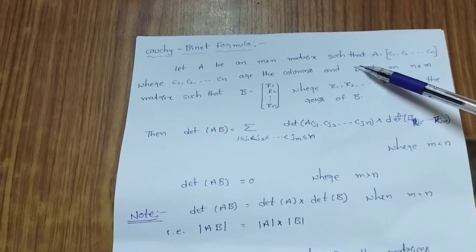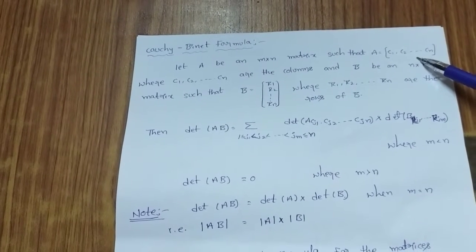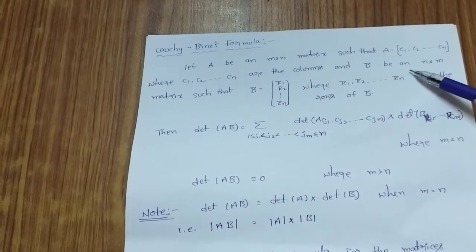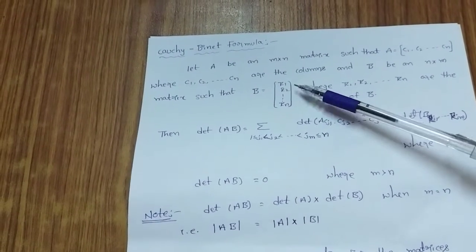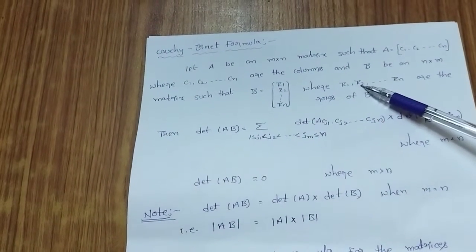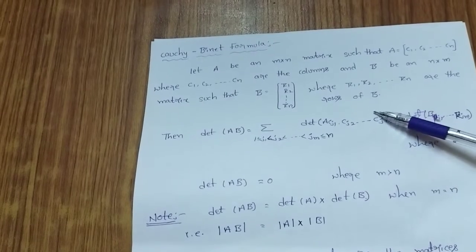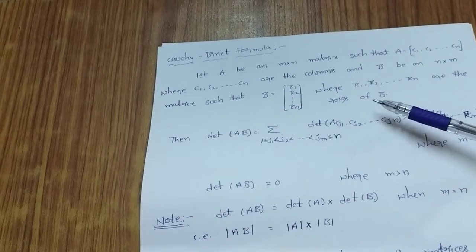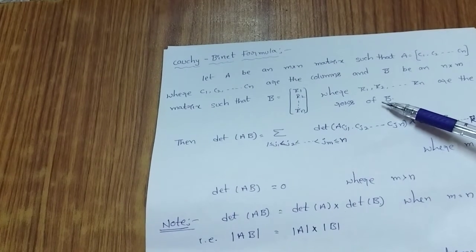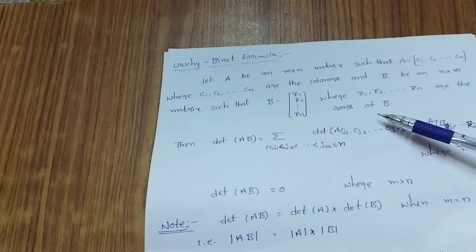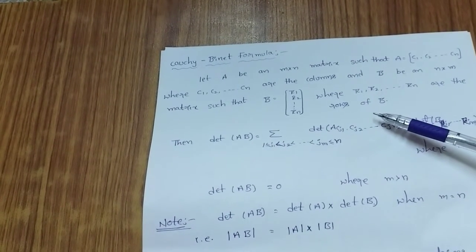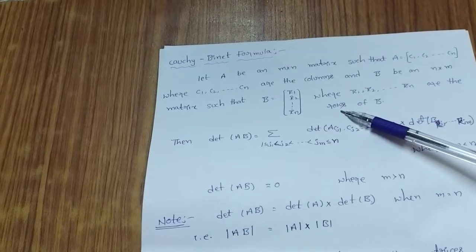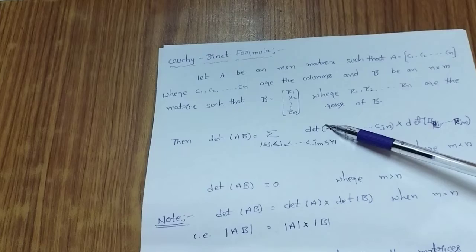Statement: Let A be an M by N matrix, where A equals columns C1, C2, and so on Cn. Let B be an N by M matrix, where B equals rows R1, R2, and so on Rn. Note that A and B are rectangular matrices — their order may be 1 by 3 or 2 by 3, and rows and columns may not be equal. A is treated as a column matrix and B as a row matrix.